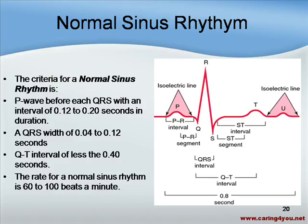The QT interval — from the beginning of the Q to the apex of the T — should be less than 0.40 seconds. When I mention interval, I'm talking about time. This means the QT interval should be less than two large boxes, because each large box is 0.2 seconds, so two large boxes equal 0.40 seconds. The normal rate for sinus rhythm is 60 to 100 beats per minute.